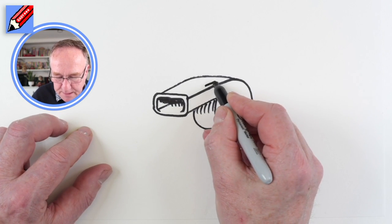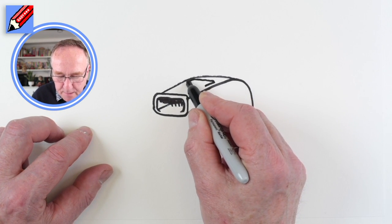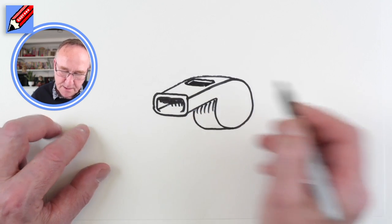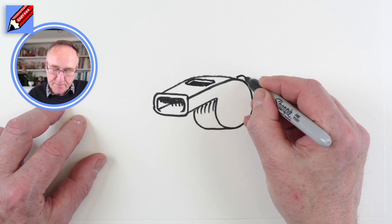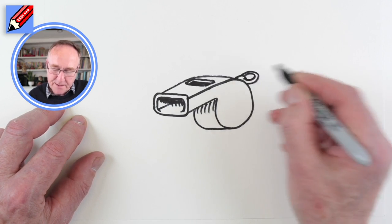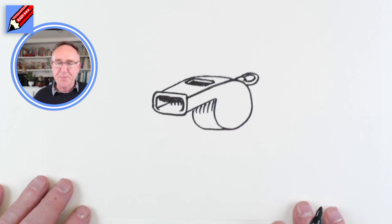We're going to want to have that little opening at the top there which is where the sound comes out, and then here we'll have a little curve like that and a curve like that and that's the little bit you tie your piece of string to.